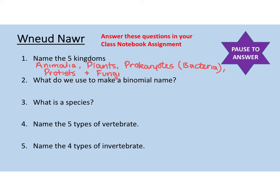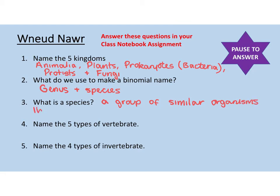Number two, what do we use to make a binomial name? So we use the genus of an organism and the species of an organism. And now number three, what is a species? A species is a group of similar organisms that have certain features in common.